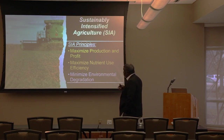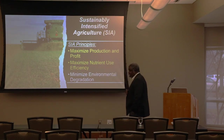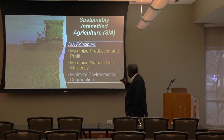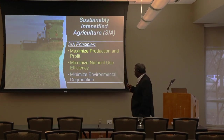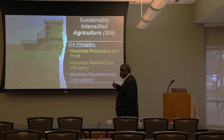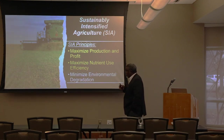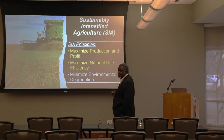Overall principles — things we're trying to accomplish on farms — is sustainably intensified agriculture, which fosters three principles: number one, maximizing production and profit; number two, maximizing nutrient use efficiency; and three, minimizing environmental degradation. That's applicable to both conventional and organic cropping systems.